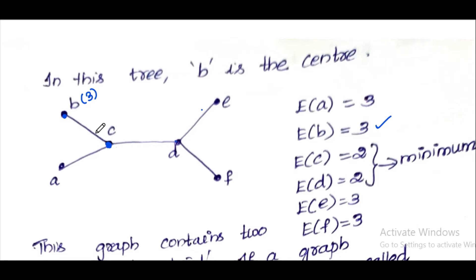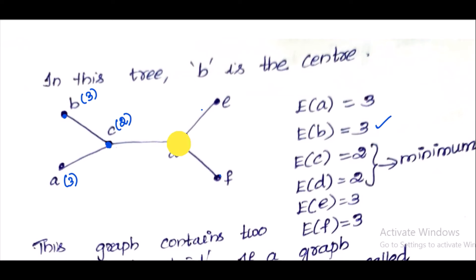For vertex A: A to C is 1, A to B is 2, A to D is 2, A to E is 3, A to F is 3 — maximum distance is 3. For vertex D: D to E is 1, D to F is 1, D to C is 1, D to B is 2, D to A is 2 — maximum distance is 2.